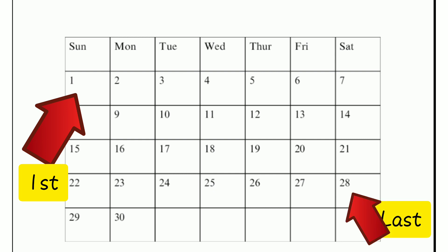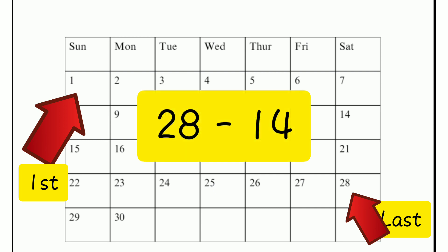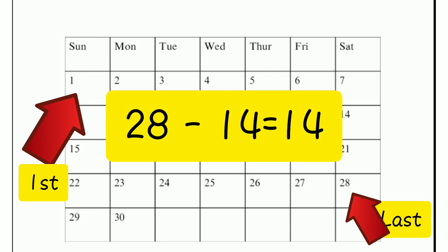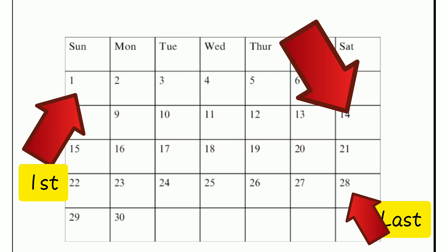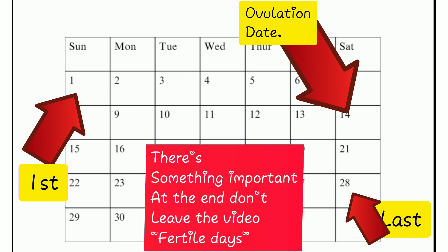So if your cycle is 28 days, that is from day 1 up to day 28. Using this as an example: 28 minus 14 equals 14. That means your ovulation day is going to be around the 14th day of your cycle.